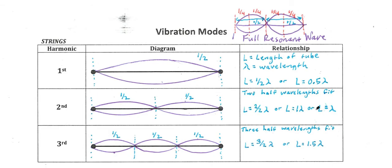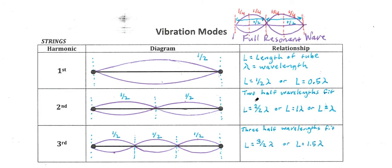We'll notice something about this formula — there are a couple of different ways we could write it. This is a more conceptual way, because the length is literally equal to two of those halves. If this was the length of the string, there'd be one, two halves there. Mathematically, it doesn't really make sense to say 'two halves' — two halves is just one. Or, rather than saying length equals one times the wavelength, one times anything is itself, so the length of the string is equal to the wavelength of this wave.